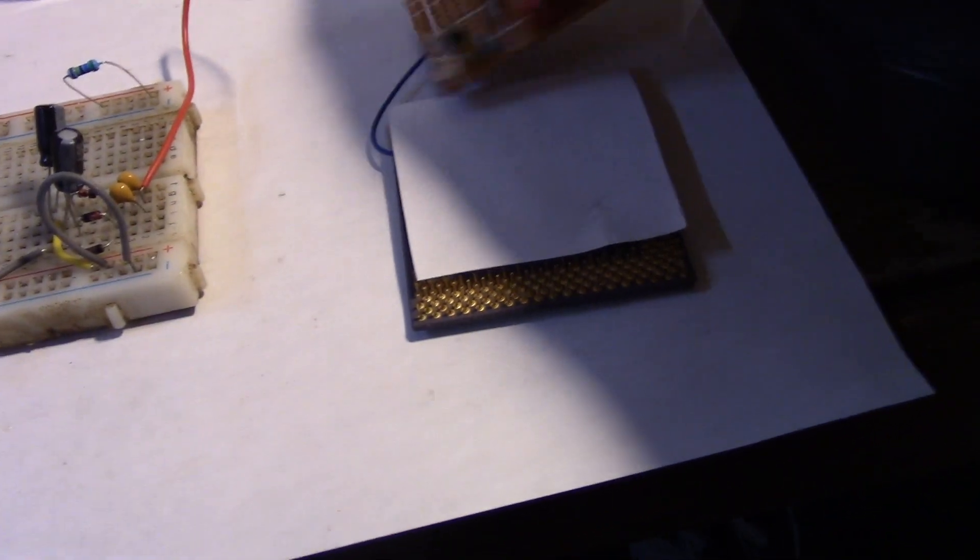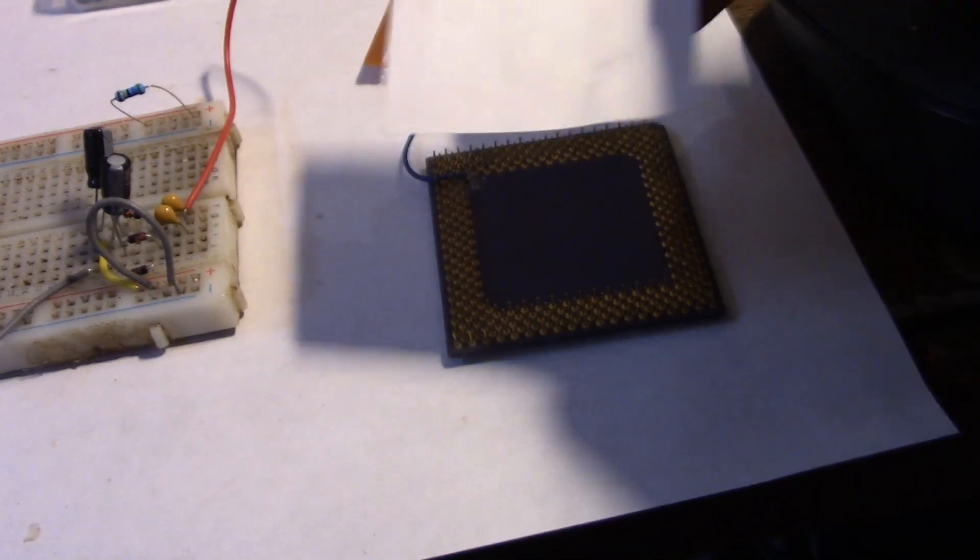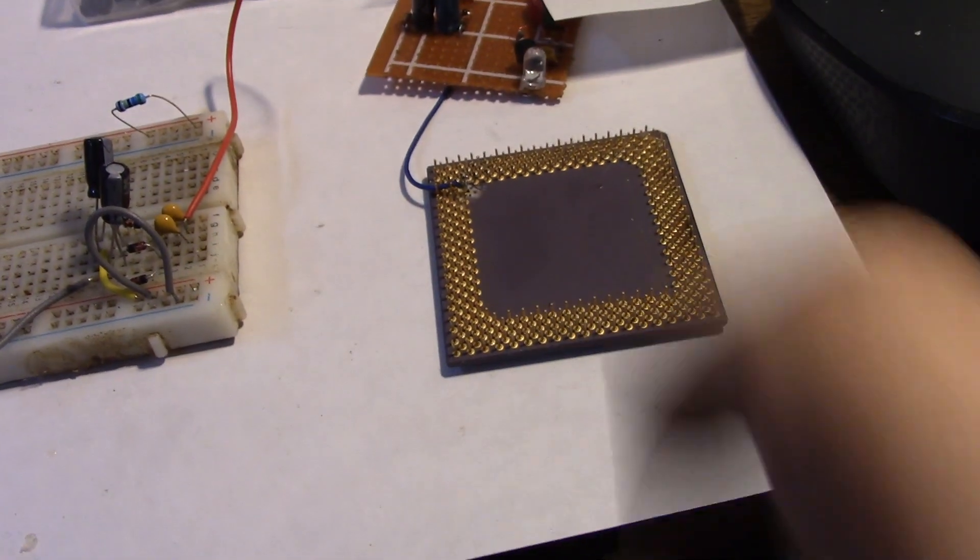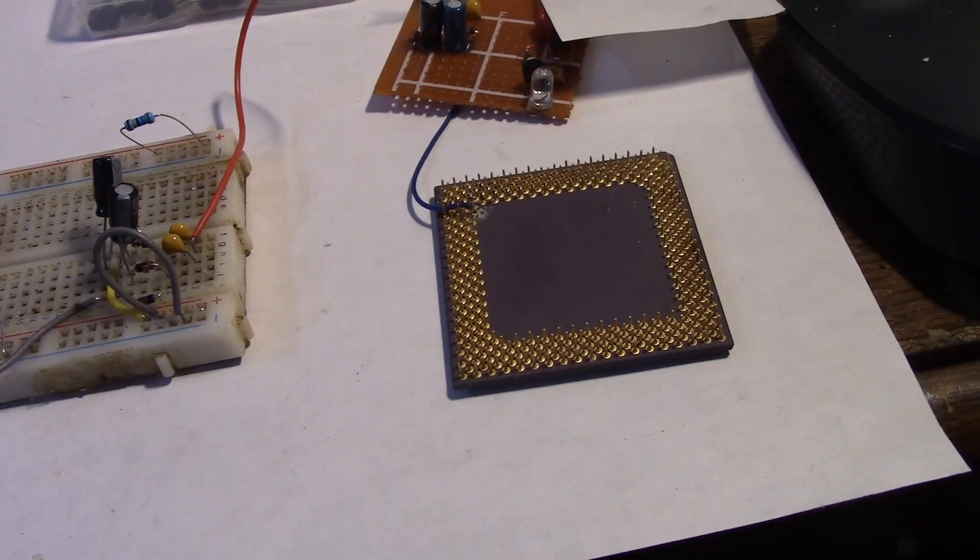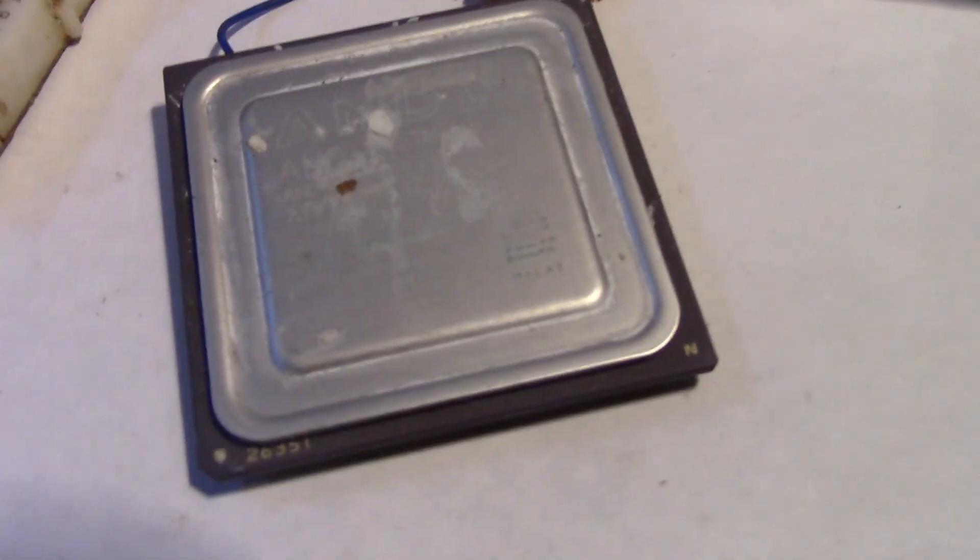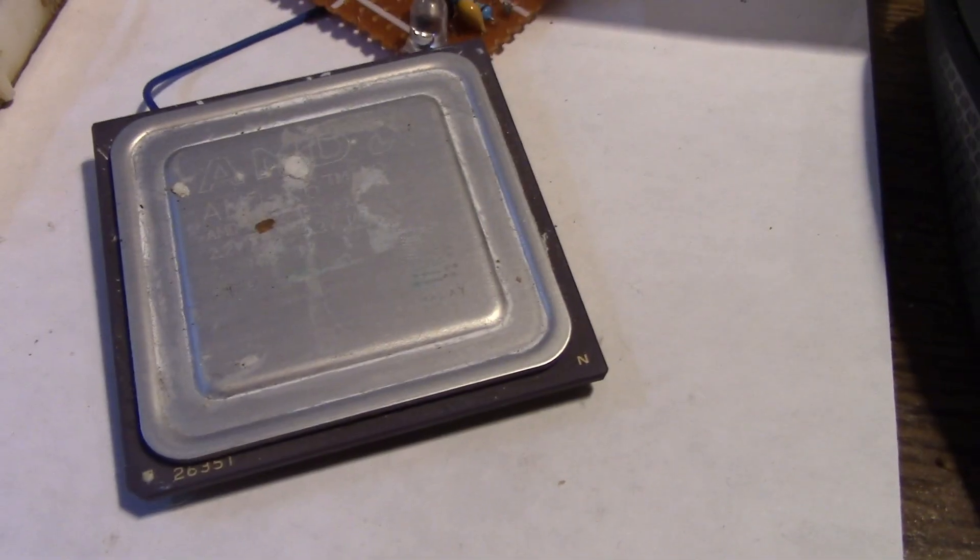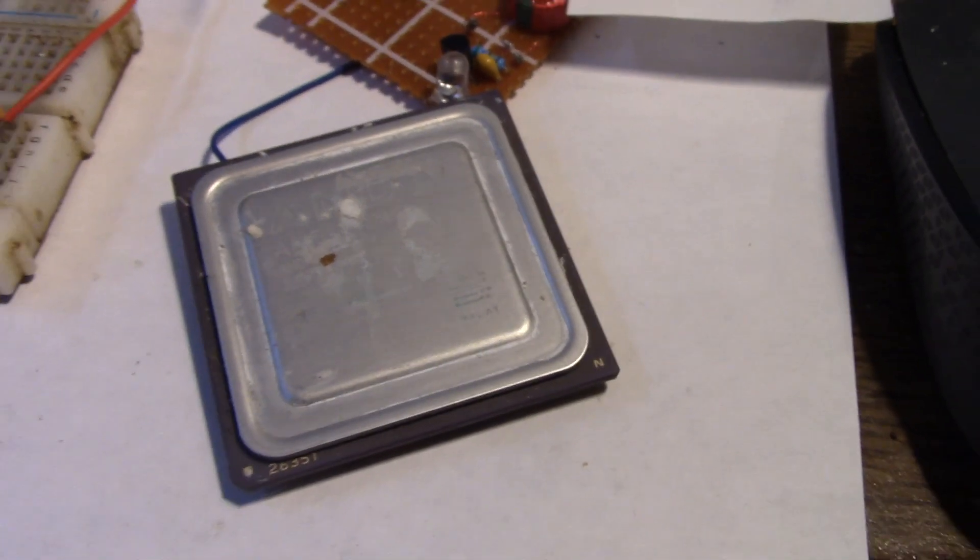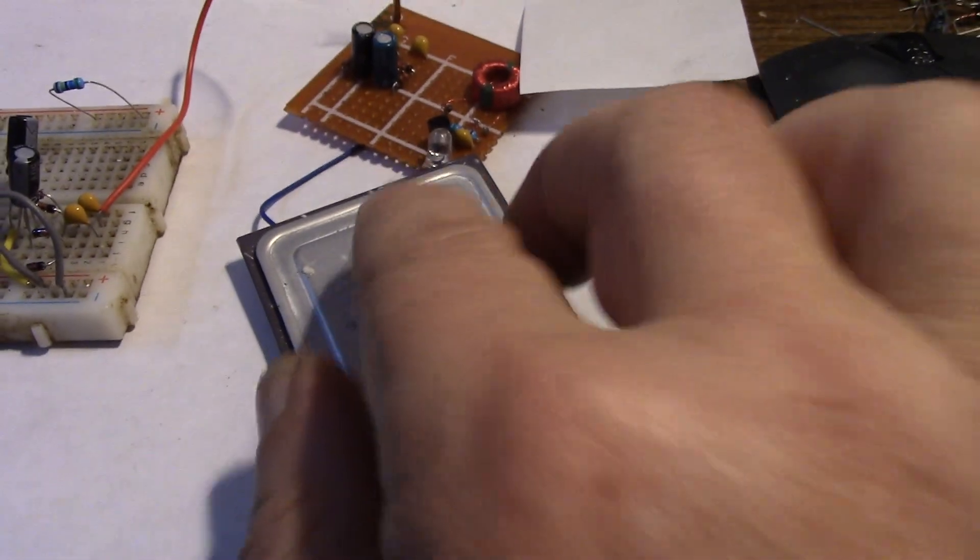So, under here, I've got a piece of paper, because of all these pins. Now, there you go, what do you think that is? And if you said, an old processor, you'd be right. That's an AMD K6, from about, what, 1997 or 1998, or something like that?